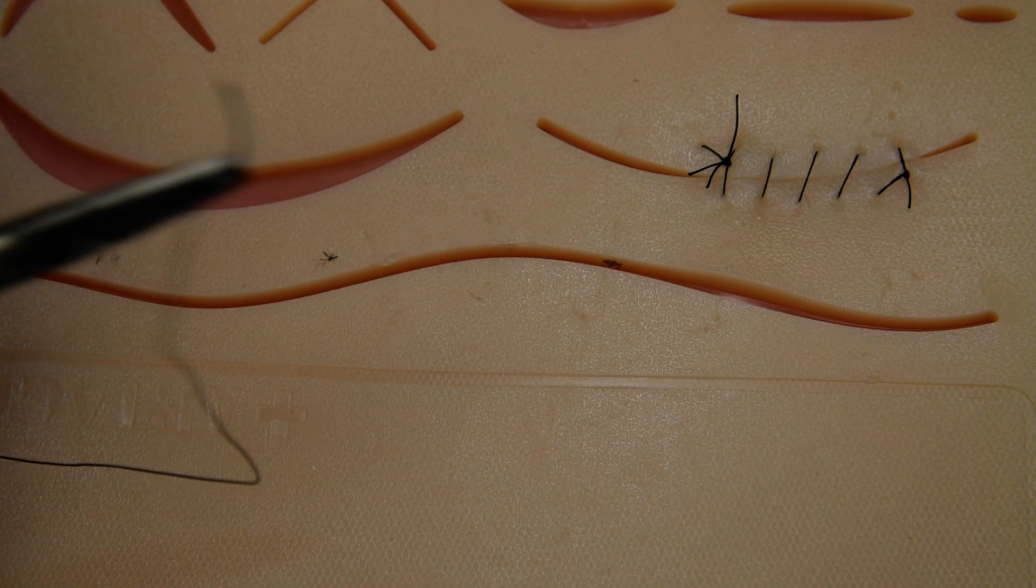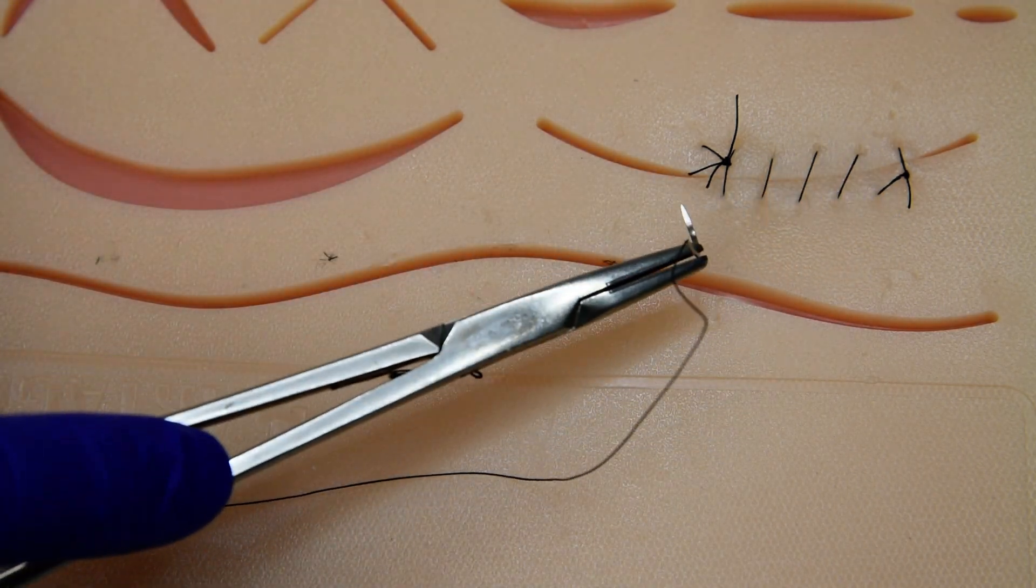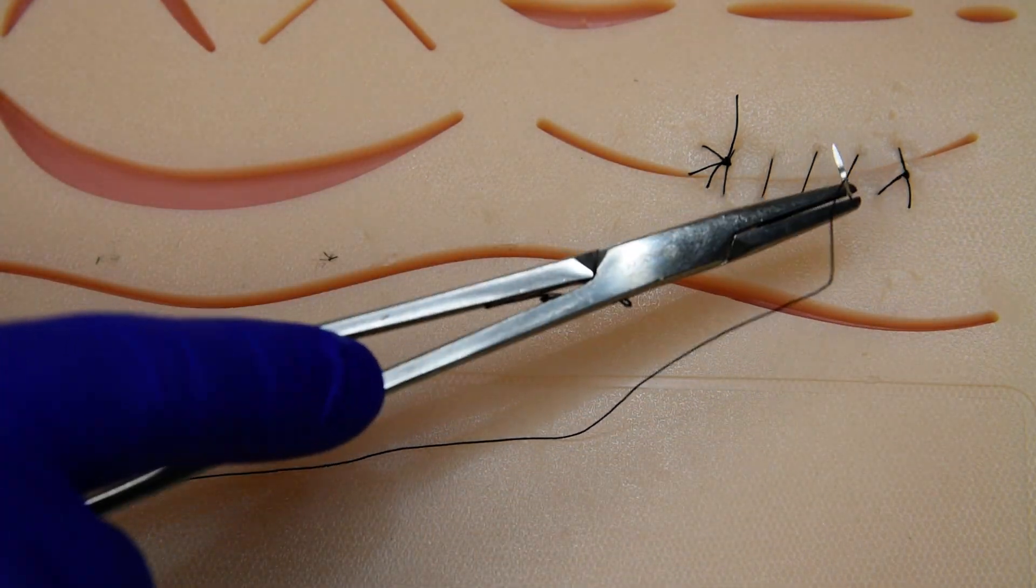Let's show you a single interlocking continuous. Here we have our simple continuous which is interrupted and then tied to a final knot.